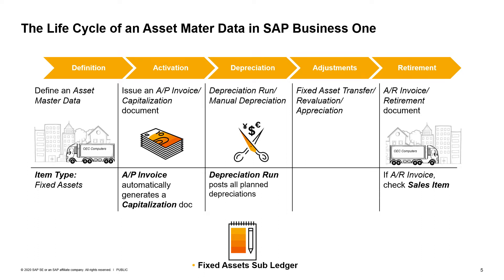Finally, the user can retire a Fixed Asset using an AR invoice. The AR invoice automatically generates a retirement document. In order to retire the asset on an AR invoice, the user should mark the Asset Master Data record as a sales item. All transactions are registered to the Fixed Asset's subledger and can be followed in the various dedicated reports.